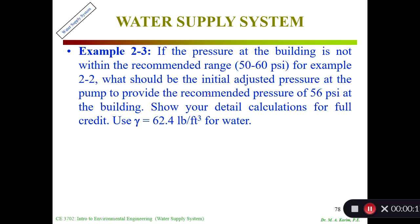In the second problem, Example 2-3, we say if the pressure at the building is not within the recommended range of 50 to 60 psi, for example in problem 2-2 we already got 43 psi, what should be the initial adjusted pressure at the pump to provide the recommended pressure of 56 psi?